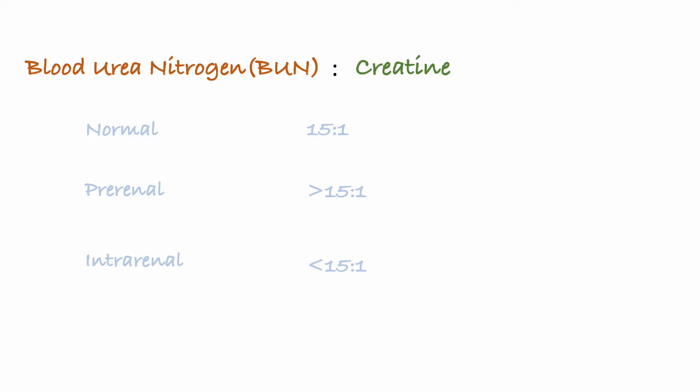It's good to remember that pre-renal is one of the major causes of acute kidney injury, and acute tubular necrosis is one of the major causes of intrarenal failure.